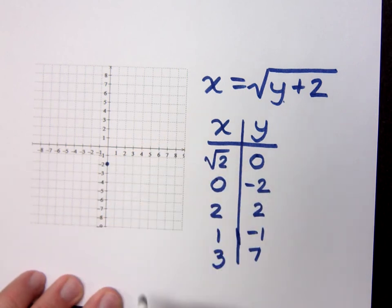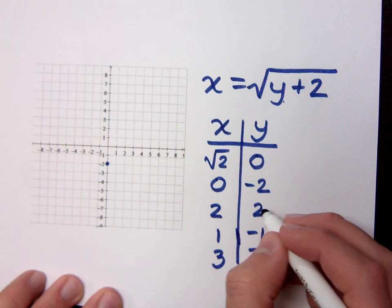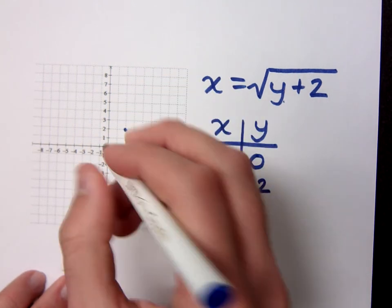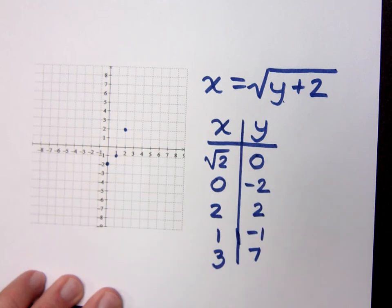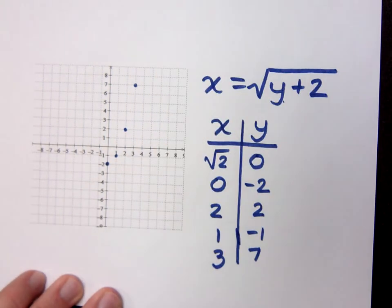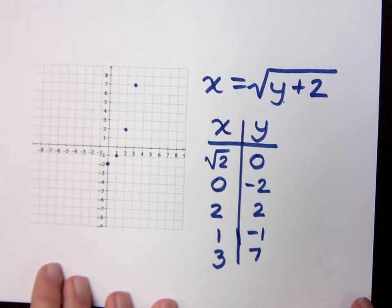0, negative 2. I've got 2, 2. I've got 1, negative 1. And the last guy that fits on here is 3, 7. And this is all that I have.